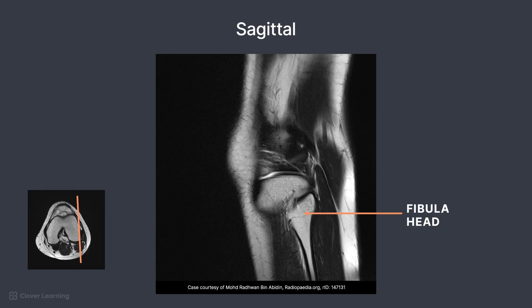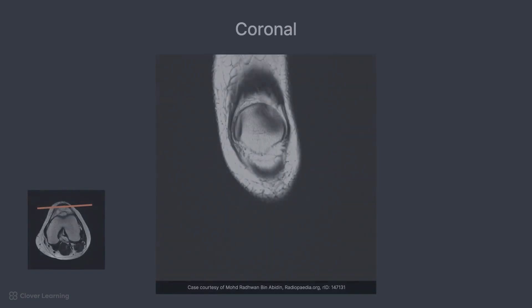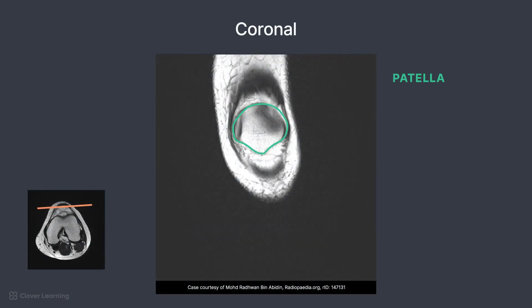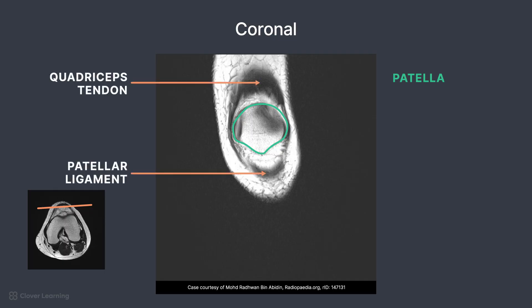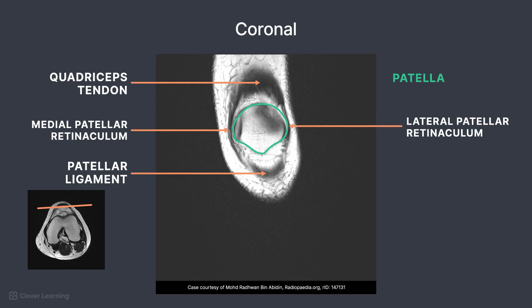Let's move on to the coronal plane of imaging. Starting anteriorly, the round-shaped patella emerges. Remember, the patella is classified as a sesamoid bone and is the largest sesamoid bone in the body. The quadriceps tendon is located superiorly and the patellar ligament is located inferiorly. On the sides of the patella, you can see the medial patellar retinaculum and the lateral patellar retinaculum.